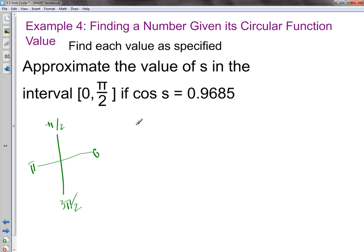You should also remember what these values are, that they're just numbers. So we're looking for the inverse sign. We just need to take the cosine⁻¹ of the cosine of s. That'll give us s. So we take the cosine⁻¹ or the inverse cosine of 0.9685.